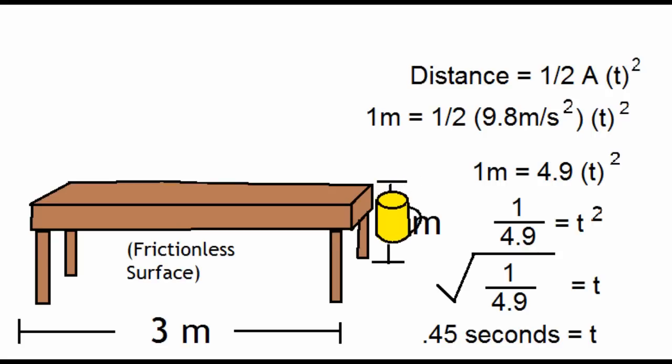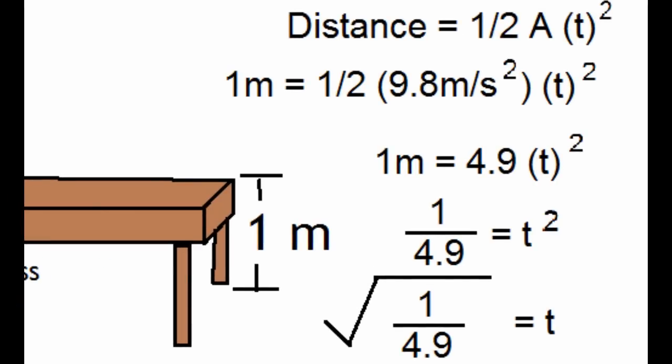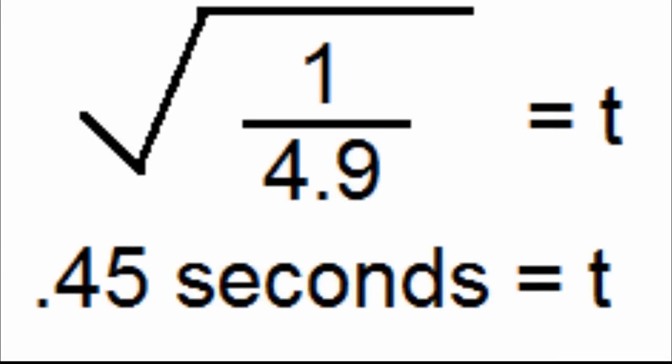Now we need to figure out the time that it takes for the coffee cup to hit the ground from the top of the table. We can do this by using the formula distance equals 1 half acceleration times time squared. So let's plug in the numbers, so we have 1 meter equals 1 half 9.8 meters per second squared times t squared. 1 meter equals 4.9 times t squared. 1 over 4.9 equals t squared. Then the square root of 1 over 4.9 equals t. So it equals about .45 seconds for the coffee cup to go from the top of the table to the bottom.